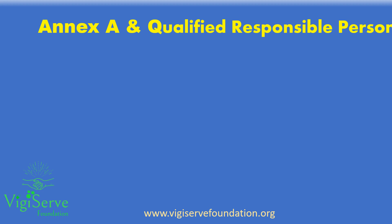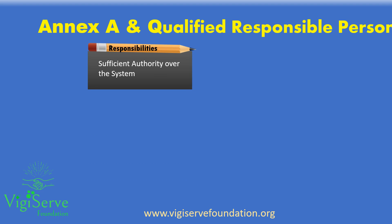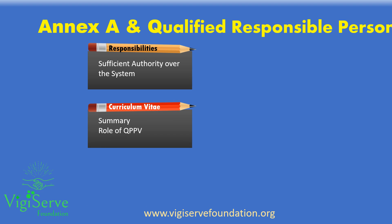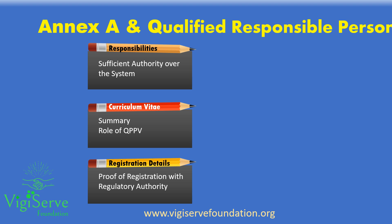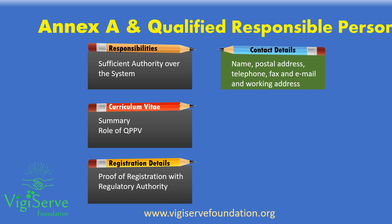The QPPV needs to include a description of the responsibilities guaranteeing that the qualified person has sufficient authority over the pharmacovigilance system in order to promote, maintain and improve compliance. A summary CV with the key information on the role of the qualified person responsible for pharmacovigilance, including proof of registration with the UDRA vigilance or the regulatory authority, should be included. Besides, it will contain contact details of the QPPV, the details of backup arrangements and details of the local QPPVs.